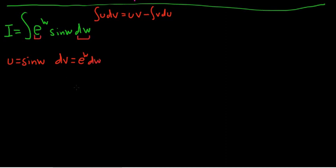Then you compute du, so the derivative of sine is cosine. So this is cosine w dw. Then you integrate dv to get v, right? So this is v equals e to the w.